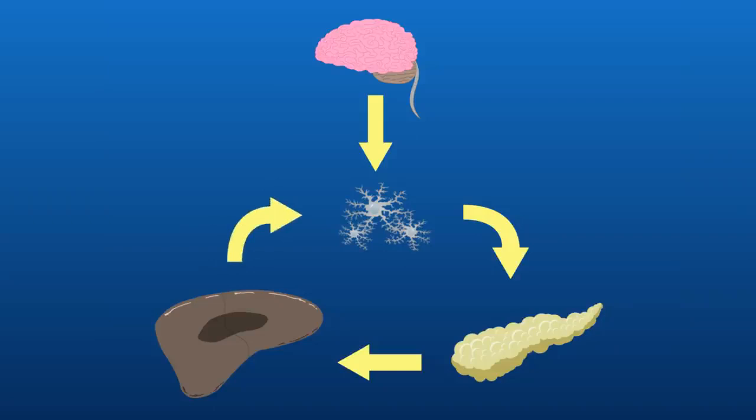Negative feedback is the loop from which the body detects the stimulus, reacts by responding accordingly and brings the body back to the normal levels.